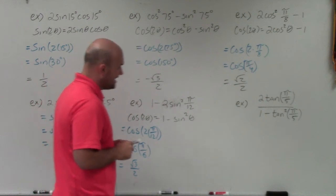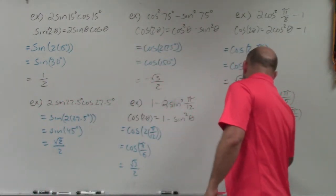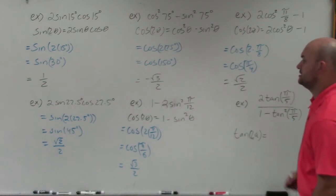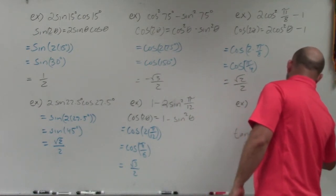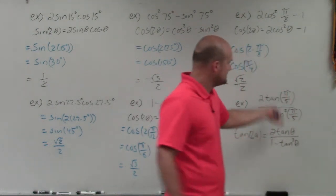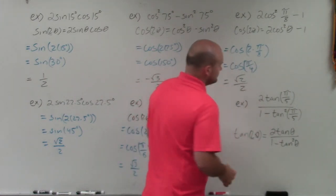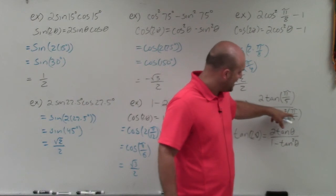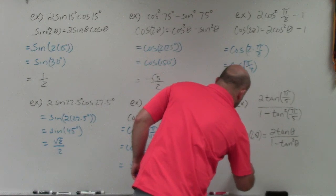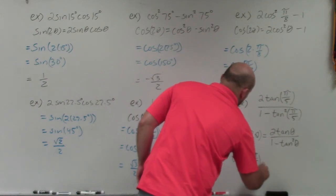For the last one, this is going to use the tangent double angle formula. The tangent of a double angle is: tangent of 2θ equals 2 tangent θ divided by 1 minus tangent squared θ. This expression has the exact same representation, with theta replaced by π/5. Plugging in π/5 gives tangent of 2 times π/5.